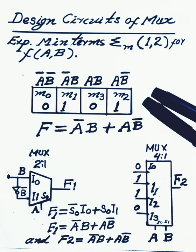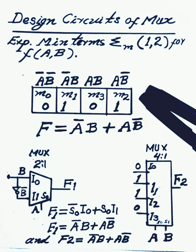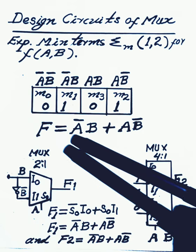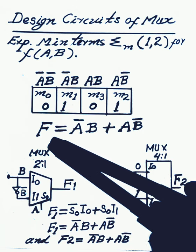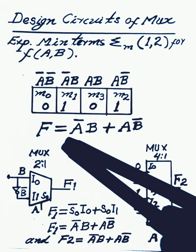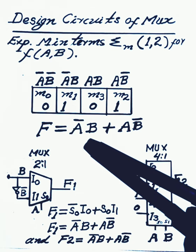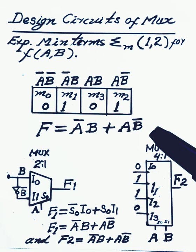First, we will make a Karnaugh map for variables a and b, and we found the sum of products: f equals a-complement b plus a b-complement.